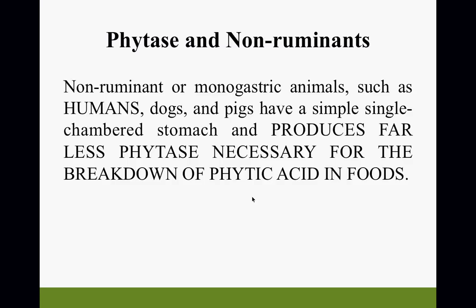As human beings, we don't produce an adequate level of the enzyme to actually break down the phytic acid in food. That's why if you eat whole grain products, you can all of a sudden find yourself becoming deficient in certain nutrients. You're like, 'That doesn't make sense — I'm eating whole plant foods and I'm still becoming deficient, I'm anemic.' Proper preparation and proper combination is the key.